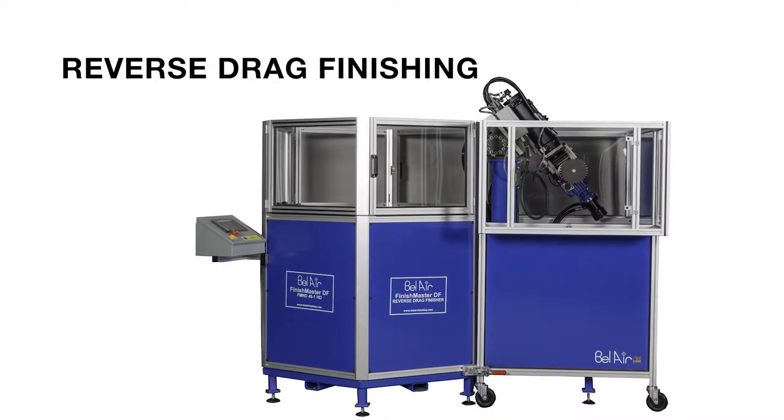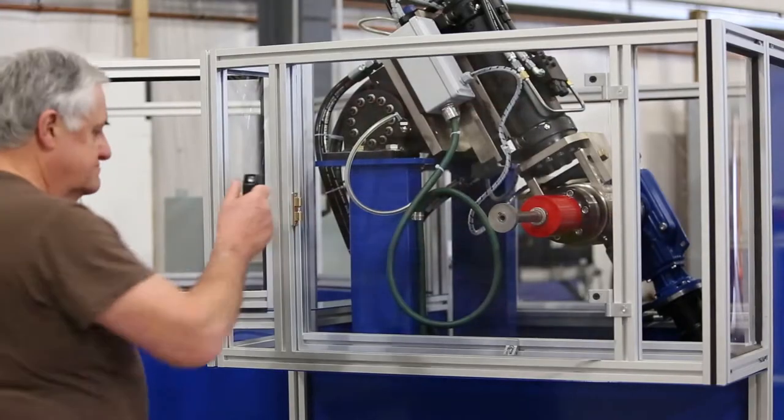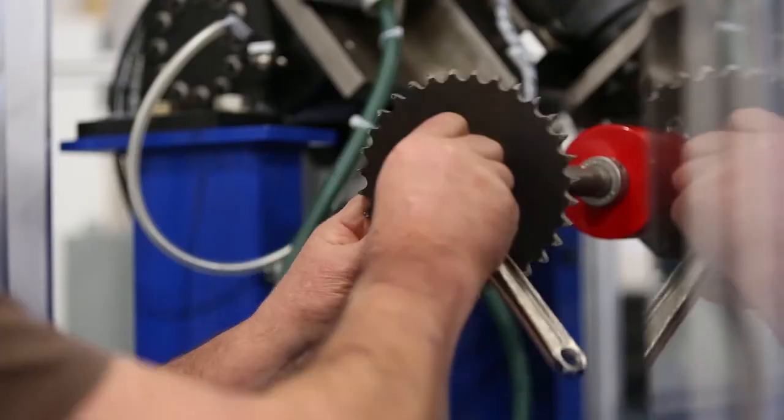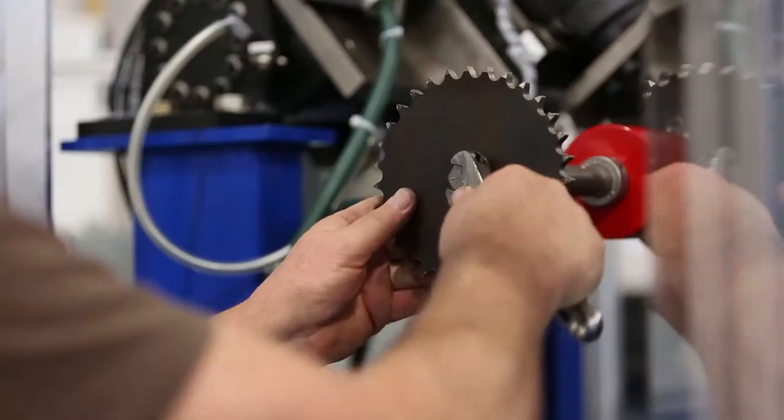The Bel Air Model FMRD48 Reverse Drag Finisher was designed with the combined technologies of the Bel Air Vertical Drag Finisher and the 5-axis robotic auto-hone finisher.